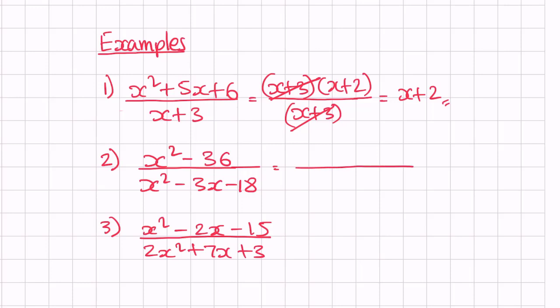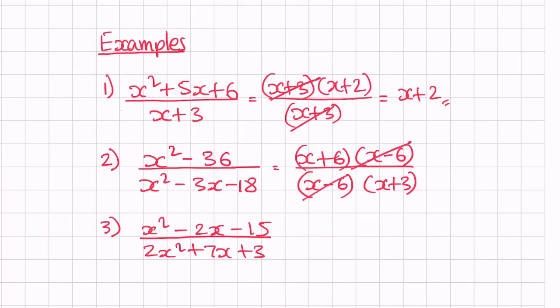The second example has a difference of two squares. We can write 36 as 6 squared, giving us x plus 6 brackets x minus 6. Factorizing x squared minus 3x minus 18 gives us x minus 6 and x plus 3. We cancel out x minus 6, leaving us with x plus 6 on the top and x plus 3 at the bottom. That's our answer.